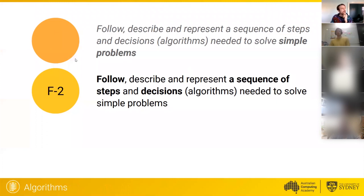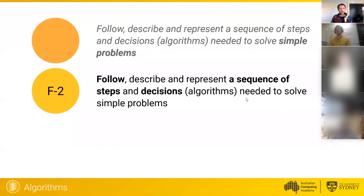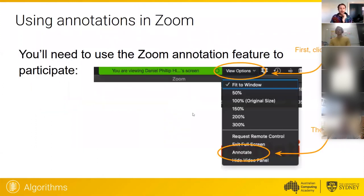This is the content description in general — it's the same one repeated for F to 2 and Years 3 and 4. The specification part is bolded, which is 'simple problems.' So most of this is algorithms actually — students are asked to follow steps, describe and represent a sequence of steps and decisions needed to solve simple problems. We're going to get you to follow this algorithm: click on the view options and then click annotate.